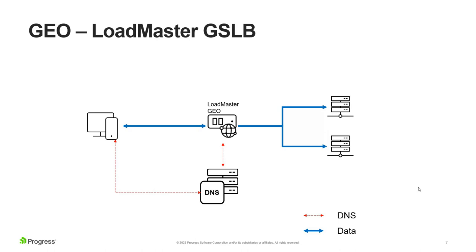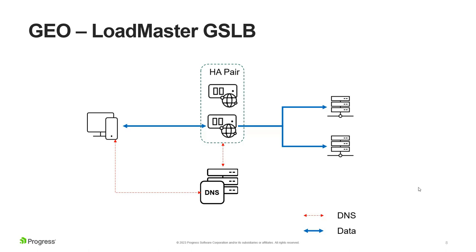You can also configure a highly available pair of load masters, which gives you high availability for your regular load balancing and makes your DNS more resilient as well. This protects against a single point of failure for a device within a data center — if a single device goes down, nine seconds later the second device will come online with the same IPs, respond to DNS requests, and take over all the connections that the first one had.